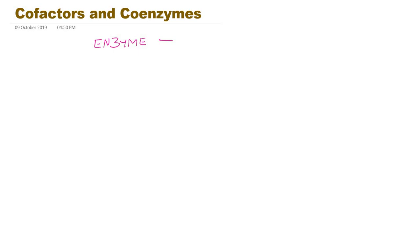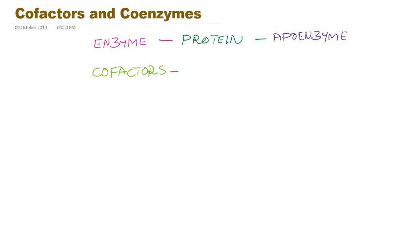If you take an enzyme, it is a protein. Almost all enzymes are protein except ribozyme, and this protein part of the enzyme is called apoenzyme. Several enzymes, apart from being a protein, also possess a non-protein component. Such non-protein components are called cofactors.